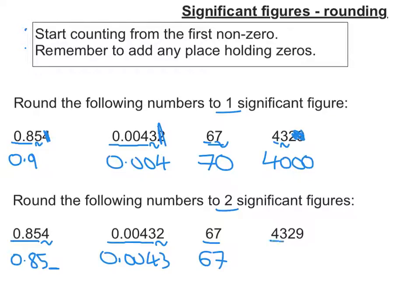4,329, well, four and three. Two tells me if I round up or stay the same and I can ignore the nine. So it's a two, so I stay the same. So it's four and three and then I put my two placeholder zeros as 4,329 rounds to 4,300, not 43.